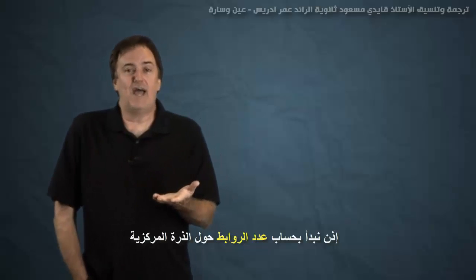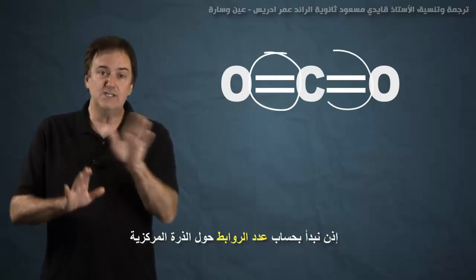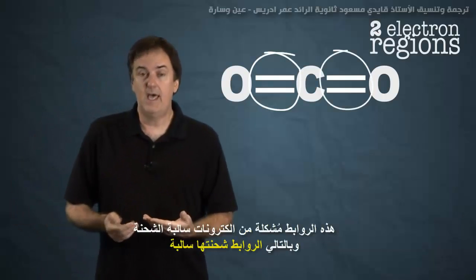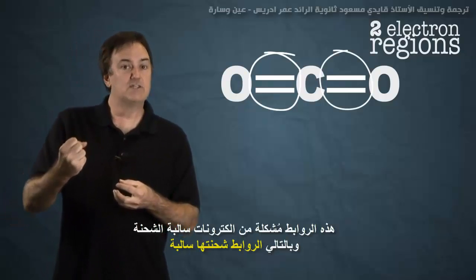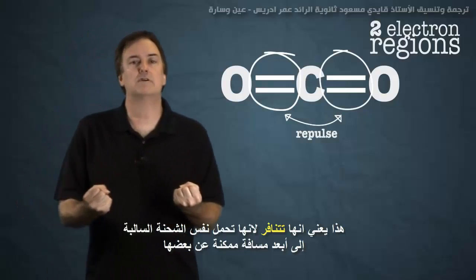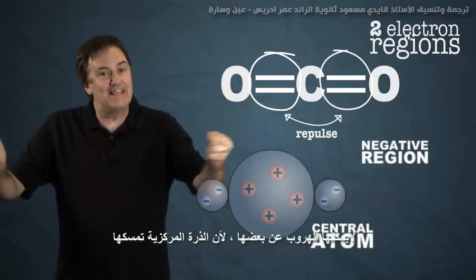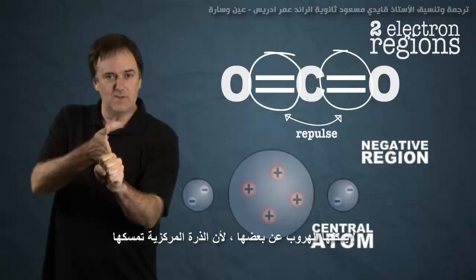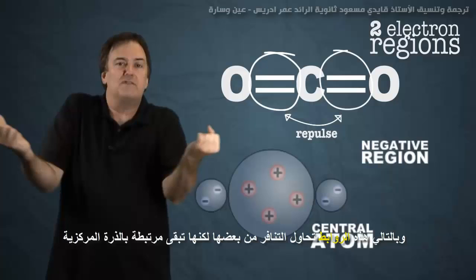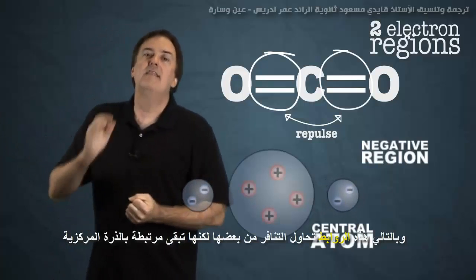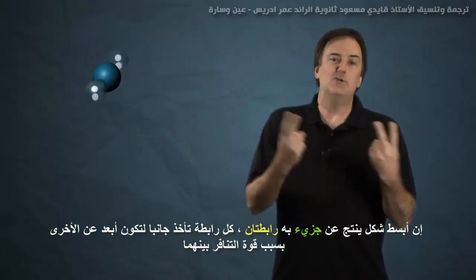The way it works — and the name kind of gives it away — is you take your electron dot formula and simply count electron regions around the central atom. Each of those regions is a negatively charged region, so it repulses all the other negatively charged regions and they try to get away from each other. They can't completely get away because the nucleus of the central atom is holding them in, so they try to get as far apart as possible. This leads to distinct molecular shapes, and the easiest case is two regions.